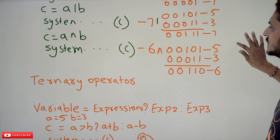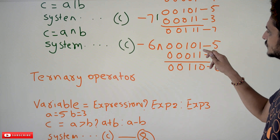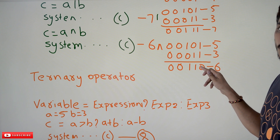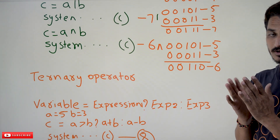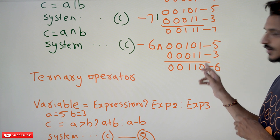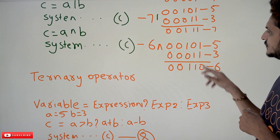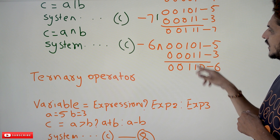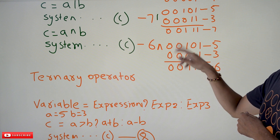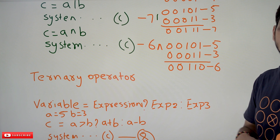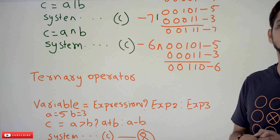Now coming to exclusive OR: 1 XOR 1 = 0, 0 XOR 1 = 1, 1 XOR 0 = 1, and the remaining bits are 0. This gives 0,0,0,0,0,1,1,0, which is equivalent to 6. So A XOR B is going to display output 6. This is how bitwise AND, OR, and exclusive OR operators work.